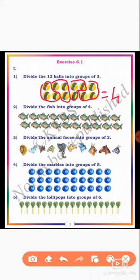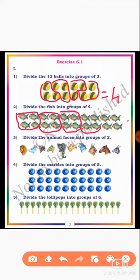Next, go to the second question: divide the fish into groups of 4. Dear students, how many fishes are there? There are 24 fishes. You can divide into equal groups, each group having 4 fishes. First group having 4 fishes, second group, third group, four group and five group. There are 5 groups.